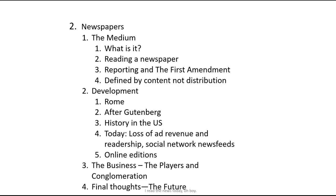We'll go over the history. It wasn't on paper, but there was news made available very quickly to citizens of Rome. We've talked a lot about Gutenberg and newspapers came along not too long after books were printed. Newspapers were the primary mass medium in the U.S. for decades and decades — longer than any other mass medium has been the king and queen of society. Going through a lot of changes today, as is anything printed on paper. We'll talk about the players, the fact that there's a lot of companies buying other companies. Then we'll have some final thoughts and talk about the future.